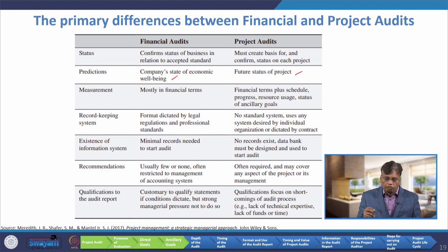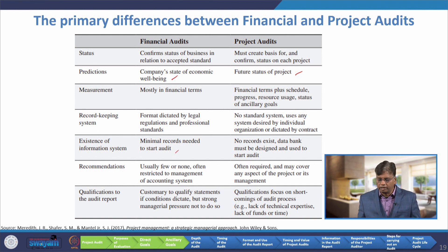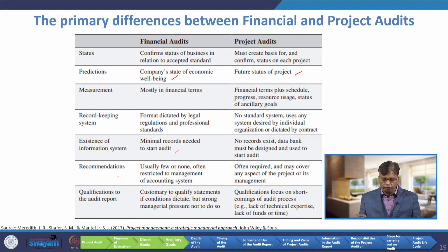With respect to record-keeping system, financial audit format is dictated by legal regulations and professional standards. For project audits, no standard system exists — any system decided by the individual organization or dictated by the contract is used. With respect to existence of information systems, financial audit requires minimum records needed to start an audit, but for project audit no record may exist — a data bank must be designed and used to start the audit. With respect to recommendations, financial audit usually yields few or none, often restricted to management of the accounting system, but for a project audit, recommendations are often required and may cover any aspect of the project or its management.